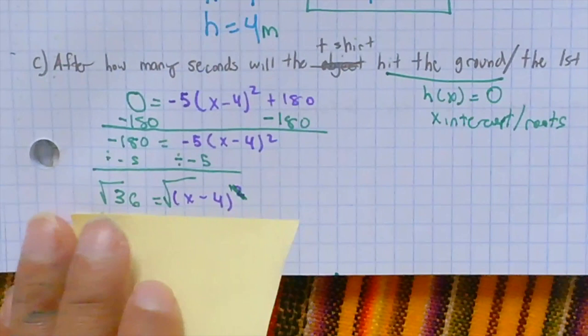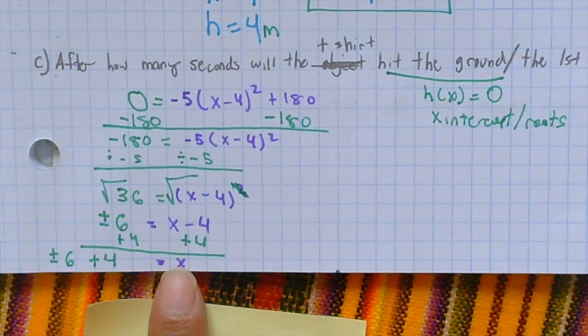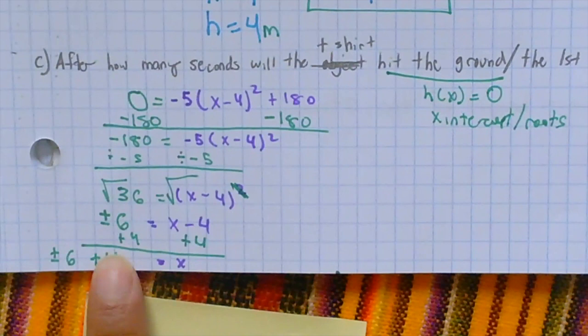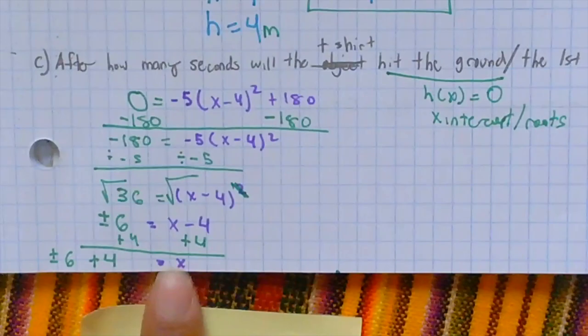Square root of 36 is positive and negative 6, which equals x - 4. When I add 4 to both sides, I then result of x equals positive or negative 6 plus 4. But, because I'm having two terms, I need to separate this whole solution into two separate equations and solve for the exact value of x.